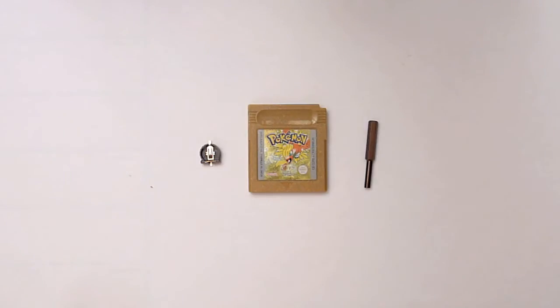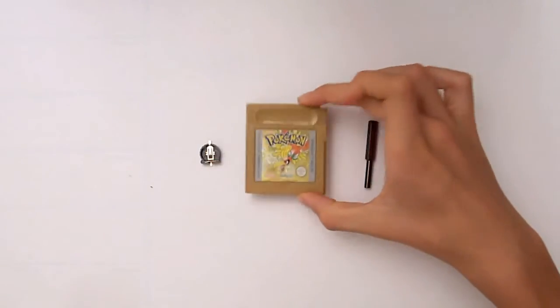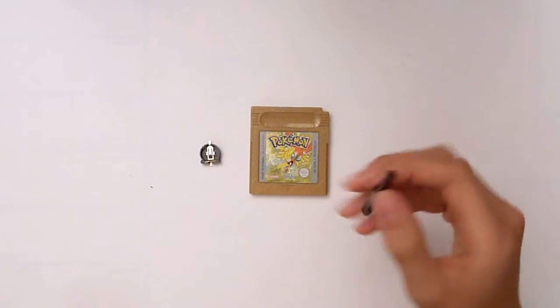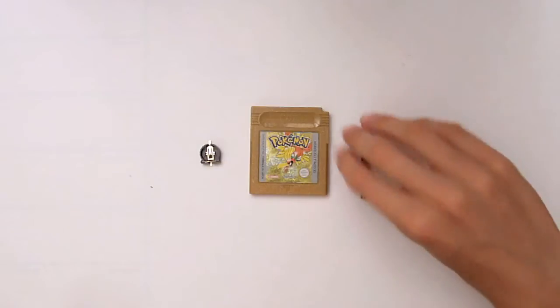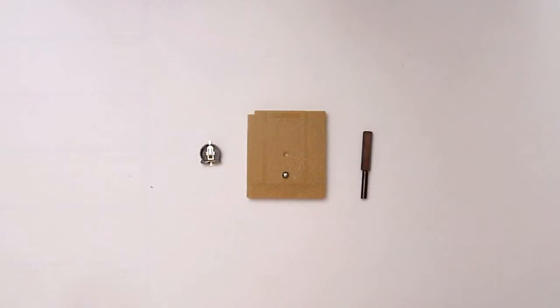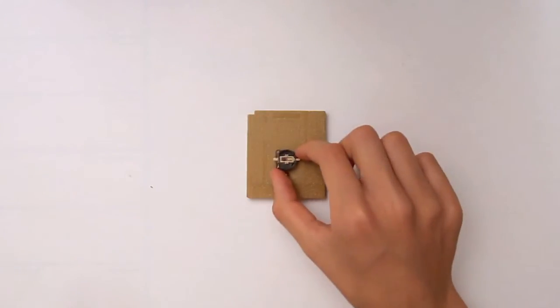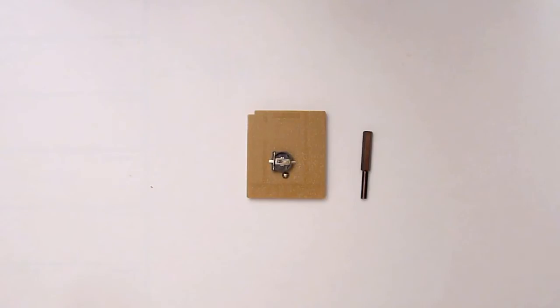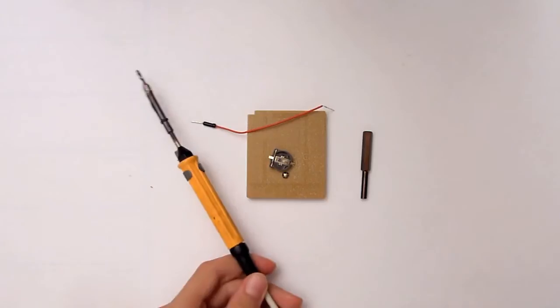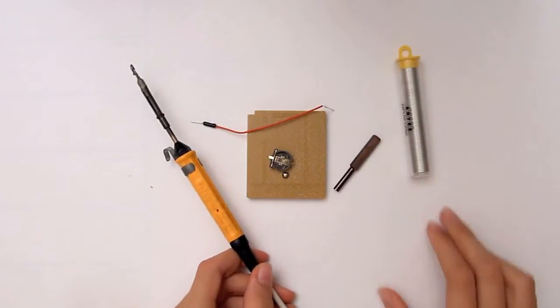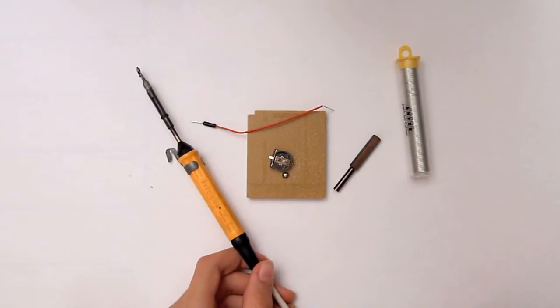These are the three main things you'll need: a game, one of the little screwdrivers for the security bits on the back of the game, and one of these little cases. You will also need some miscellaneous stuff, such as wire, a soldering iron, some solder, and maybe some tools such as pliers.